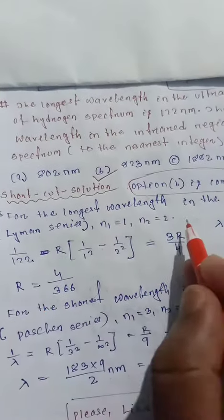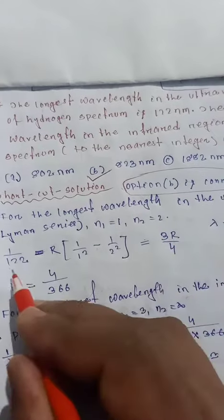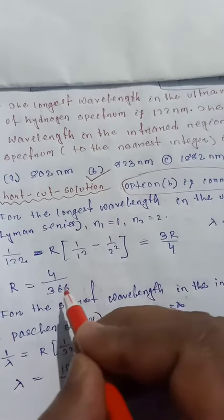So R equals how much? R equals 4 over 3 times 66.